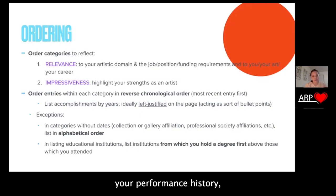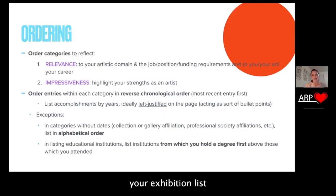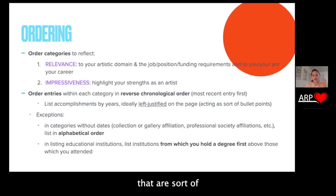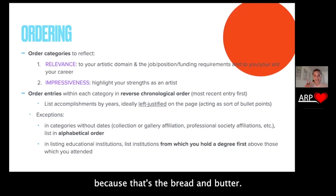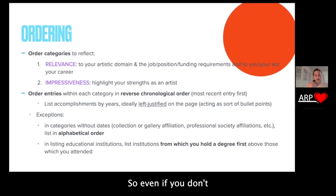For instance, your performance history if you are an actor or a musician, your exhibition list if you're an artist, your publication list if you're a writer — there are certain categories that are sort of primary, that have more weight to them. It's what people really expect to see on the first page, because that's the bread and butter.